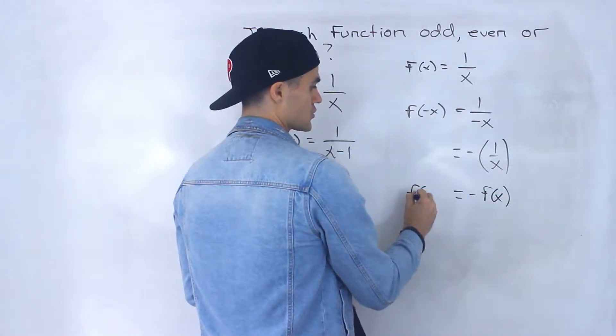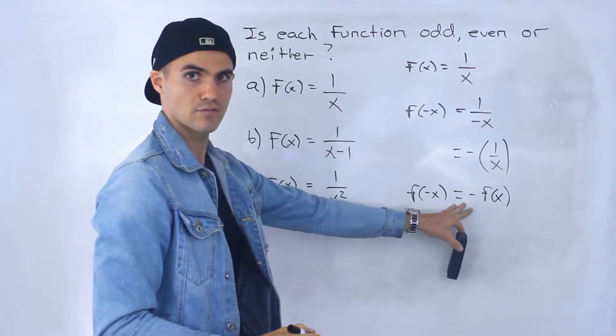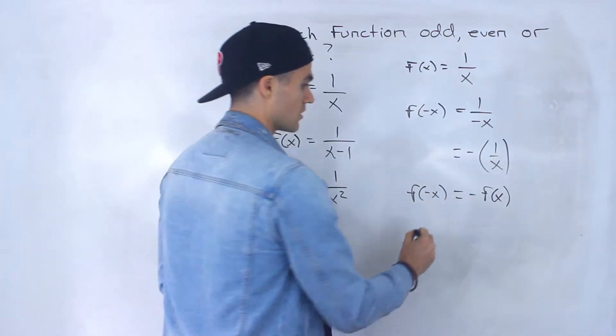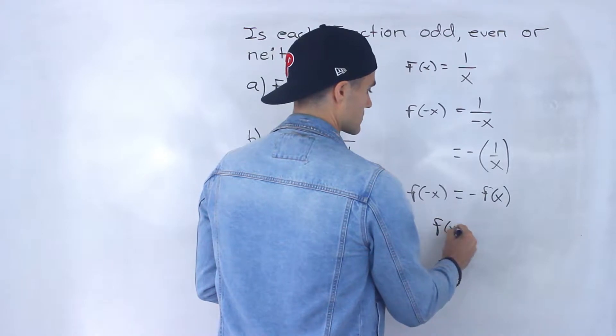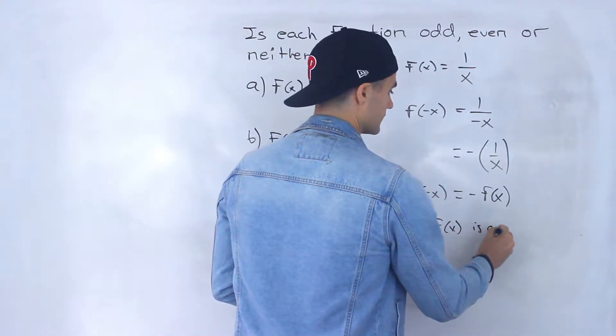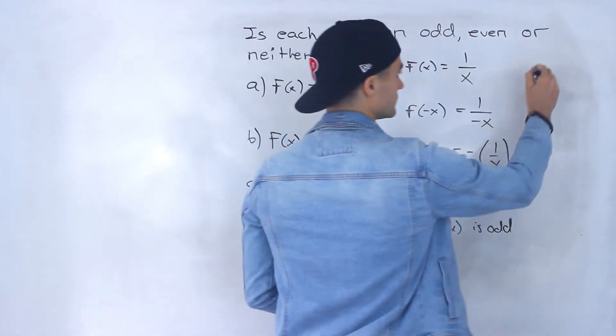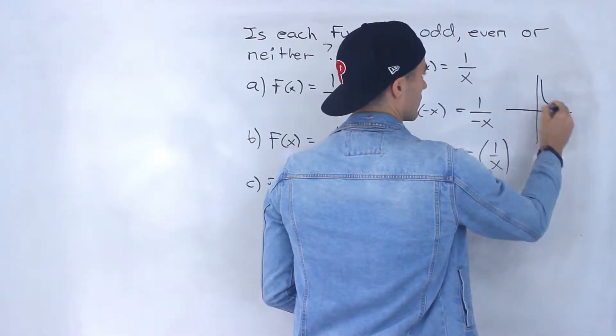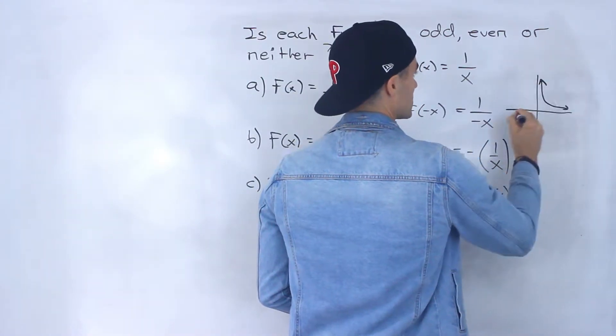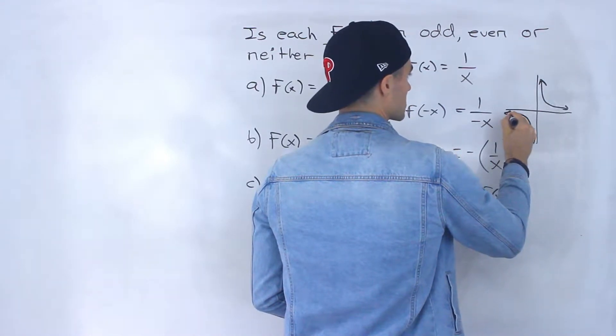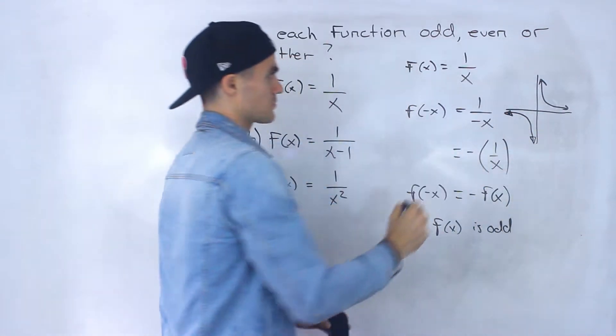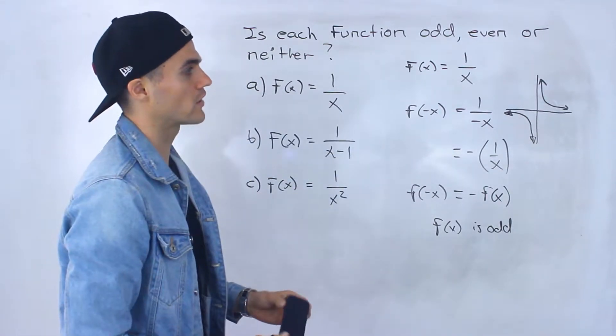And so what we just showed is that f of negative x equals negative f of x. And we know when we get this result that f of x is odd. And you can see it as well. Sometimes you can't graph these functions, or you can always graph it, but sometimes the graphing is going to take long. But this one's pretty simple, it's just the parent function 1 over x.